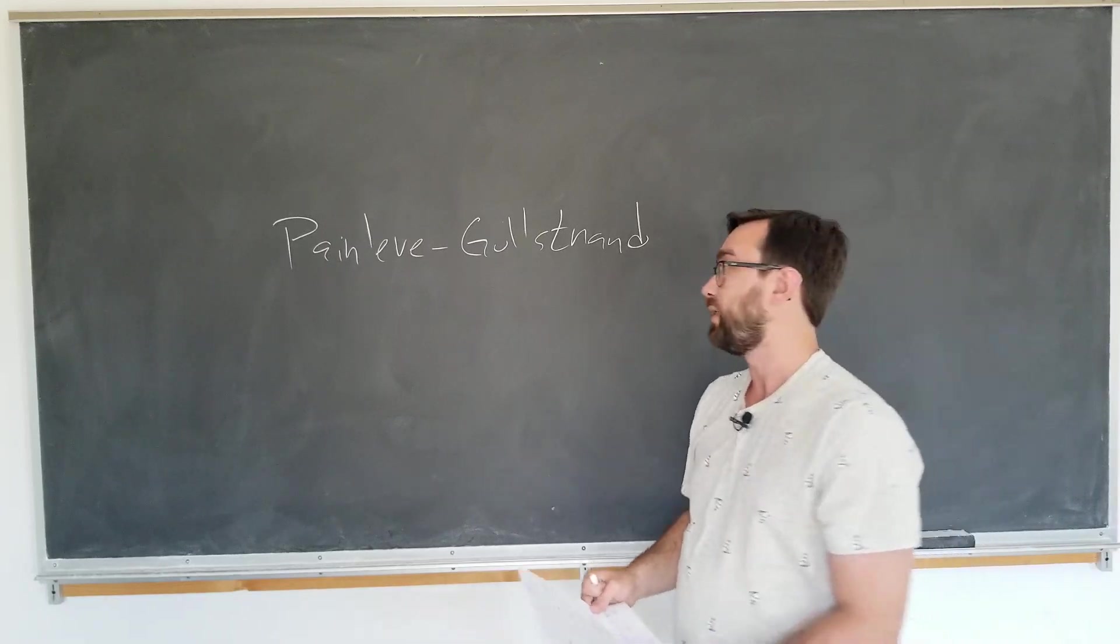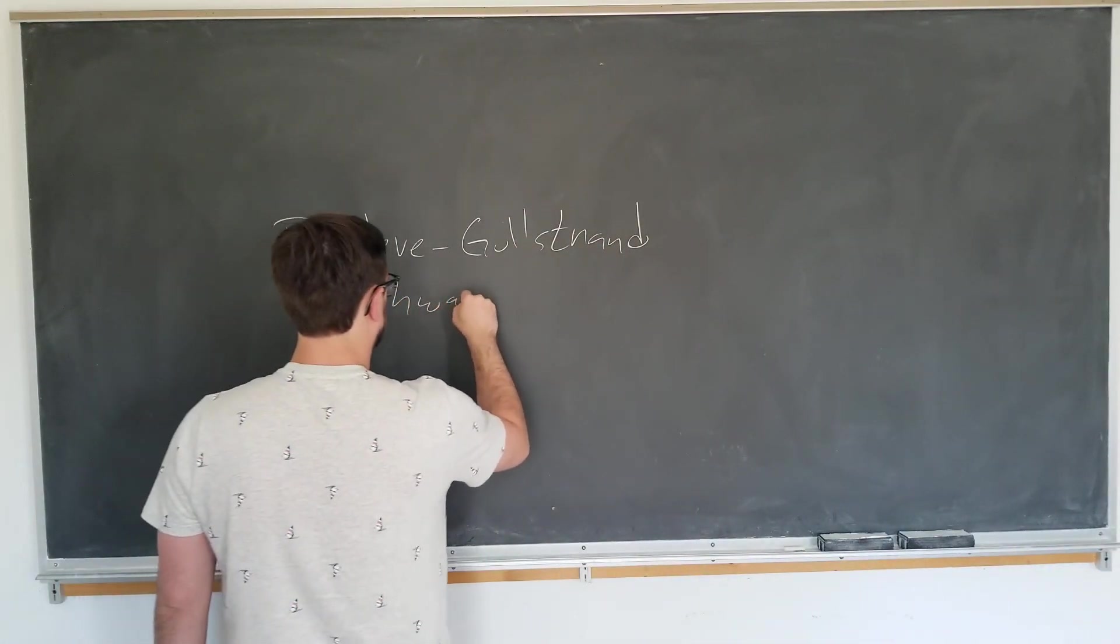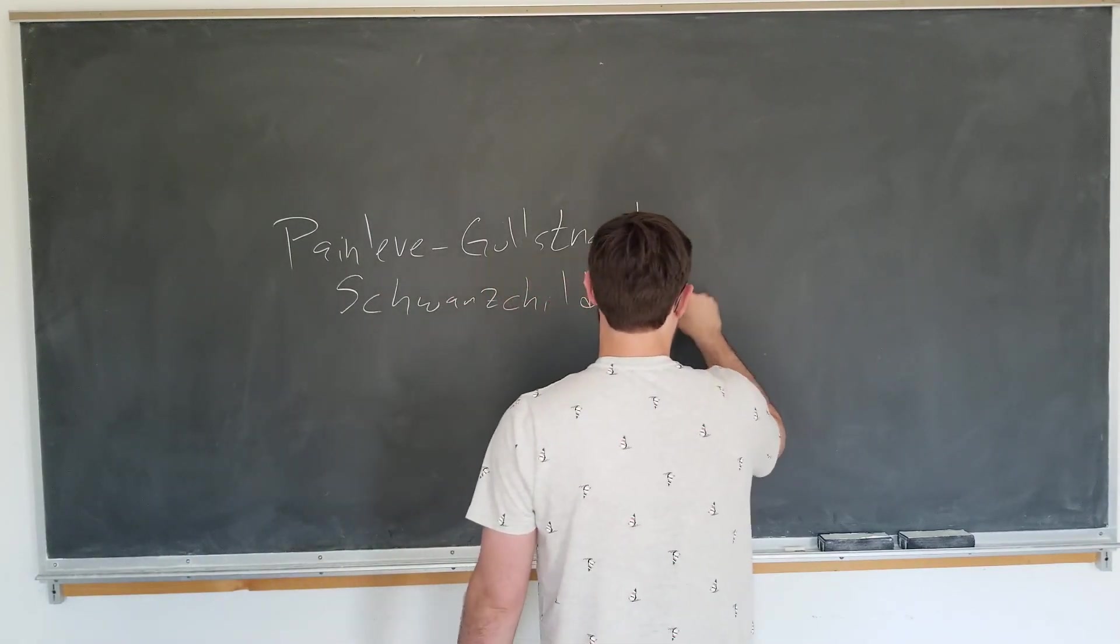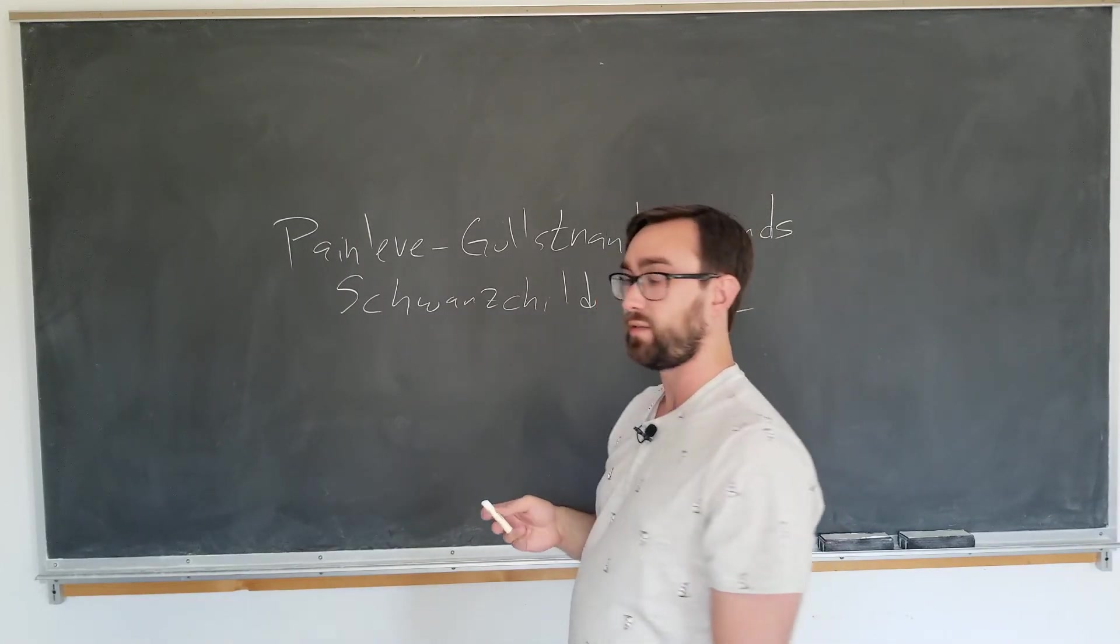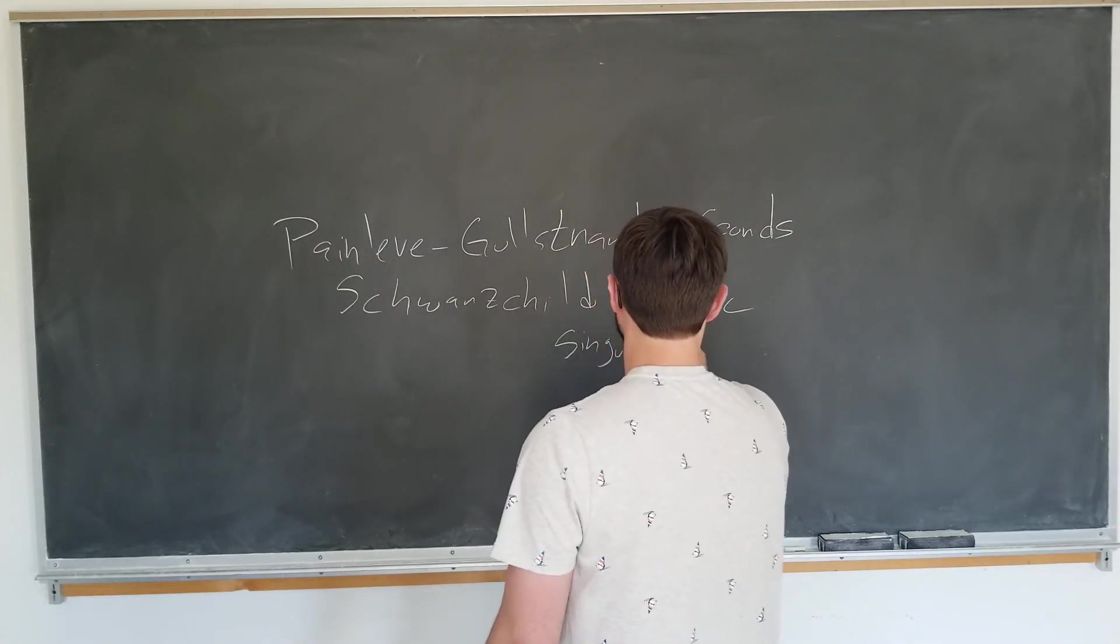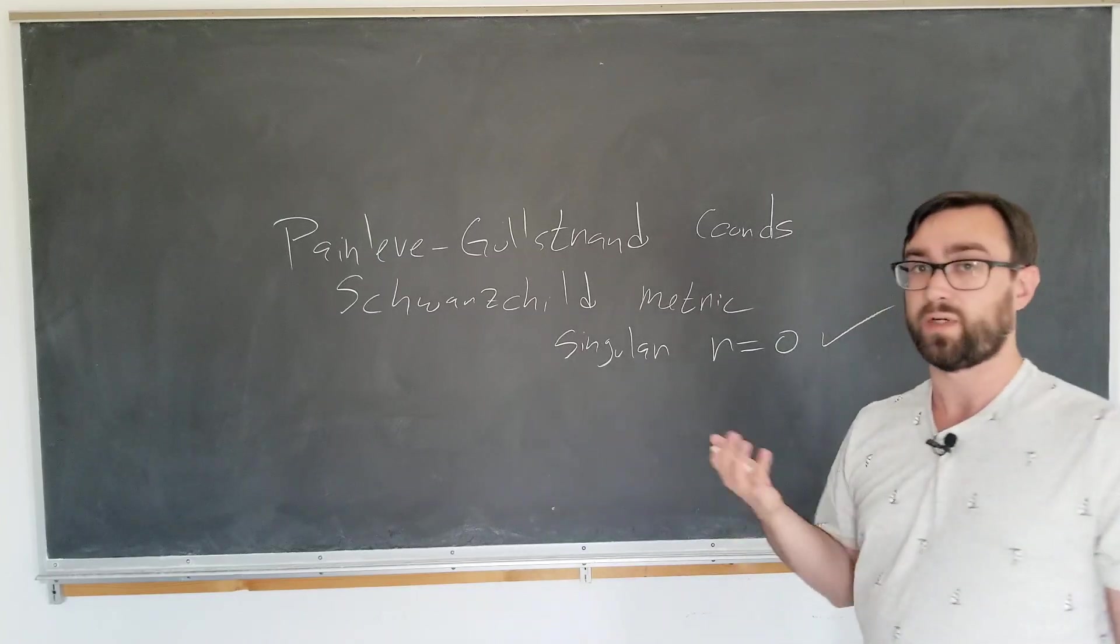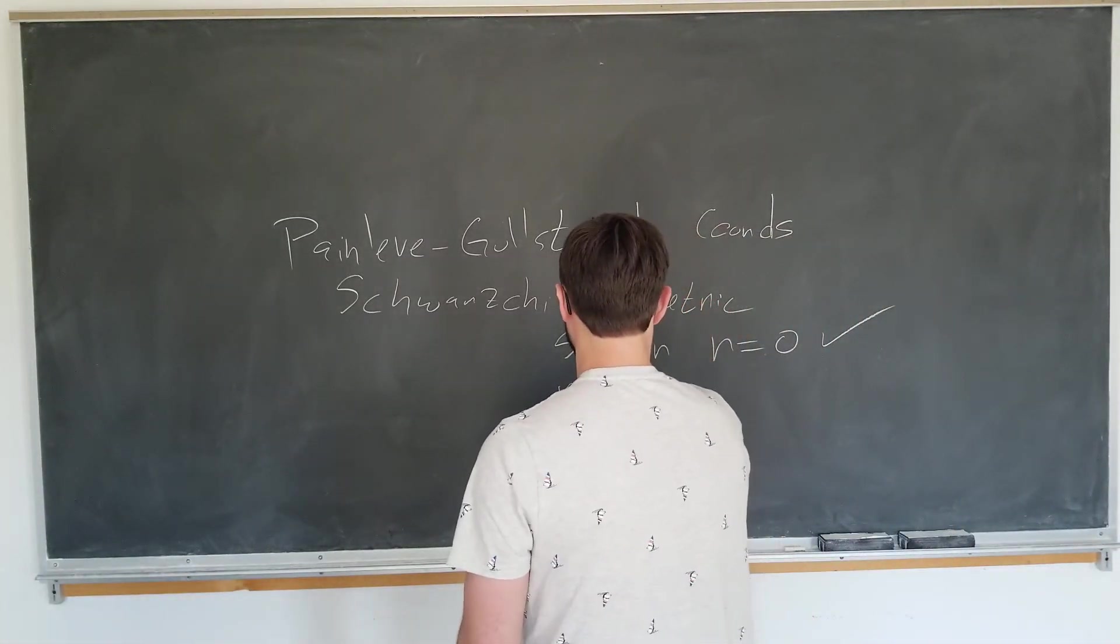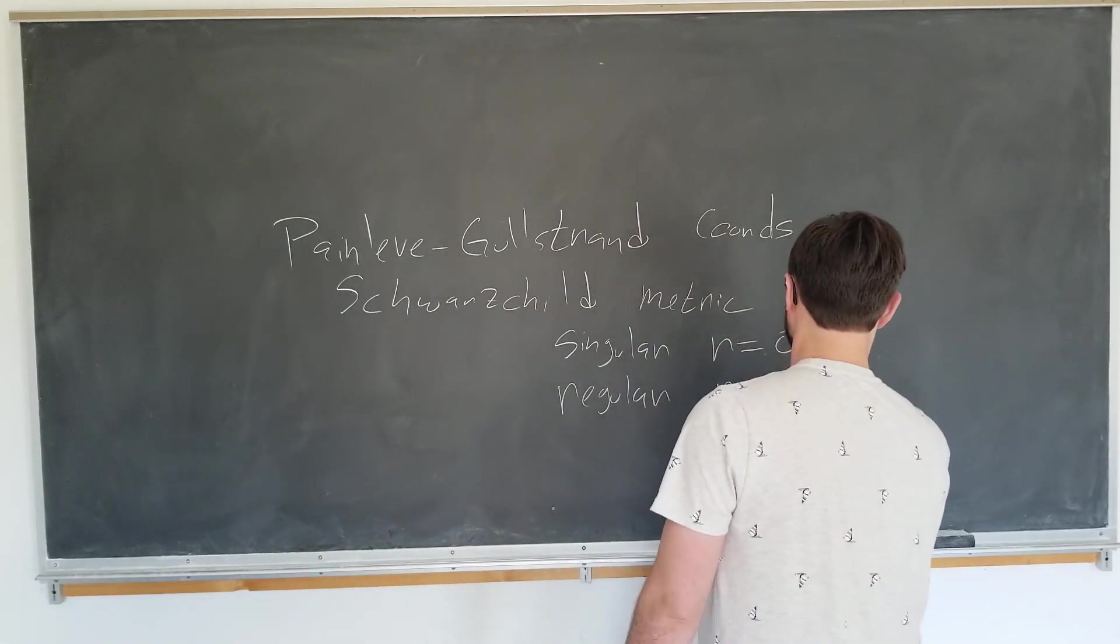These are interesting because they show that the Schwarzschild metric is going to be singular at r equals 0, which we know it should be, but it actually shows that it is regular or non-singular at r equals rs.